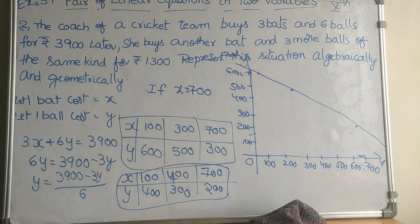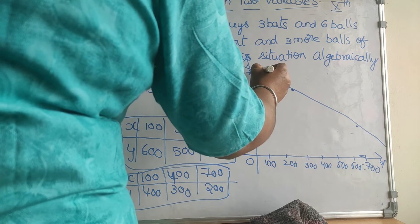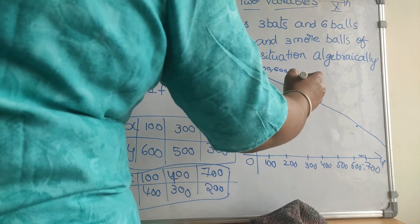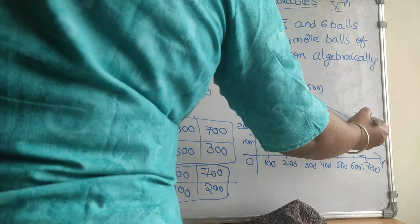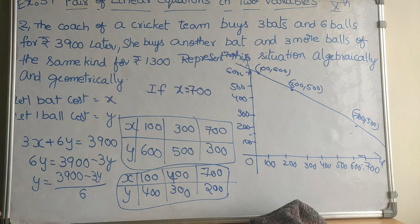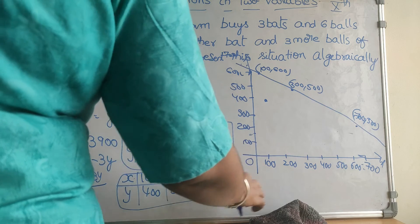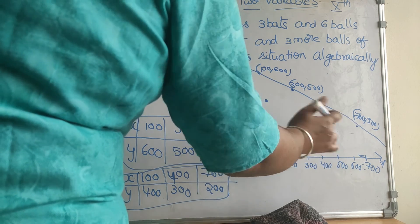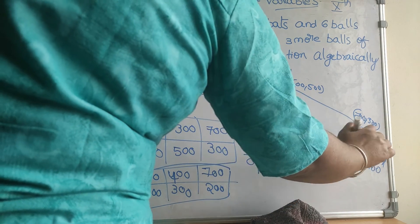For the second equation, plotting the points on the same graph: when x is 100, y is 400; when x is 400, y is 300; when x is 700, y is 200. Joining these points gives the line for the second equation.